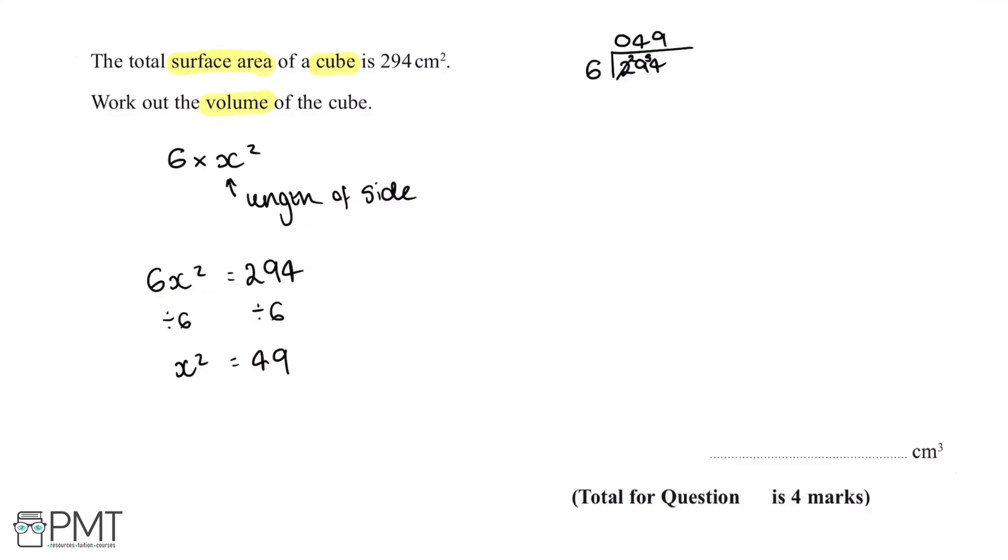Next if we square root both sides, we'll get x equals the square root of 49 which gives us x equals 7. This means that one side of the cube is equal to 7 centimeters.